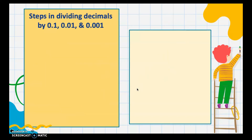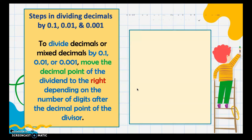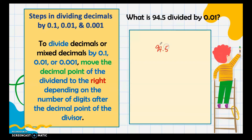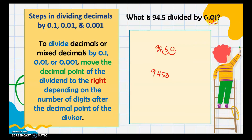What if the divisor is 0.1, 0.01, or 0.001? To divide decimals or mixed decimals by 0.1, 0.01, or 0.001, just move the decimal point of the dividend to the right, depending on the number of digits after the decimal point in the divisor. For 0.01, there are two digits after the decimal, so we move two places to the right, adding zeros to empty place values. If dividing by 0.1, move only one place to the right.